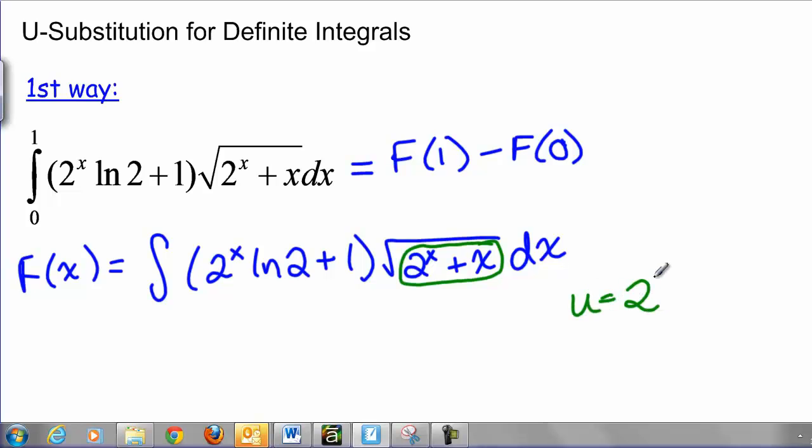U equals 2 to the X plus X. Another thing I should say about u-substitution is sometimes you try u equals something and you can't make it work. But that doesn't mean that u-substitution isn't the way to solve the problem. You might just have to pick a different value for u. So in this case we're going to let u equal 2 to the X plus X and take the derivative and see what it is. The derivative of 2 to the X is 2 to the X times the natural log of 2, and the derivative of X is 1, so we have 2 to the X natural log of 2 plus 1, the whole thing, times du.